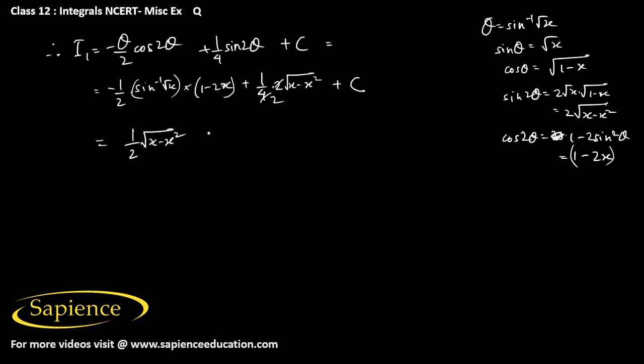So I1 equals 1 by 2 into 1 minus 2x into sin inverse root x, plus 1 by 2 root over x minus x squared.